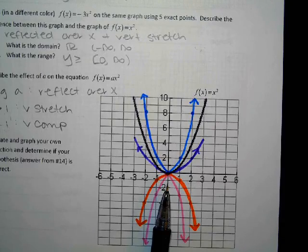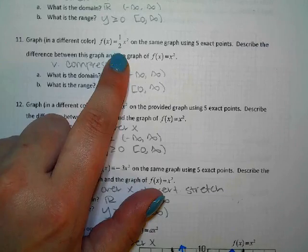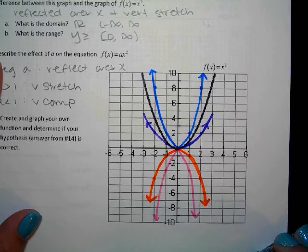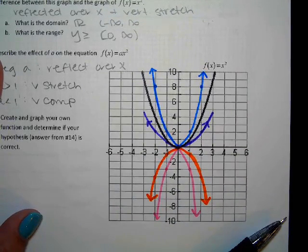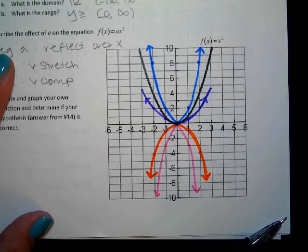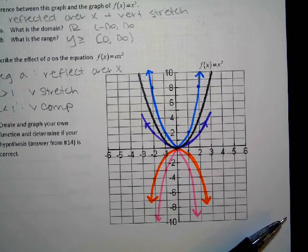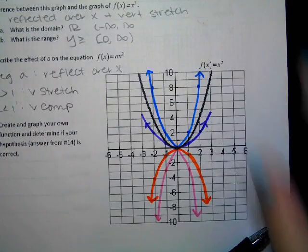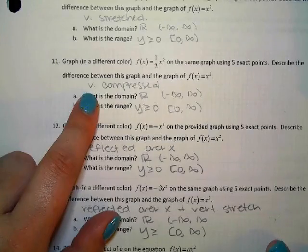The one-half graph — the dark blue — is like the hamburger with too many toppings that you squished to fit in your mouth. You compressed it. It has the appearance of something short and fat. We call that a vertical compression — V comp.